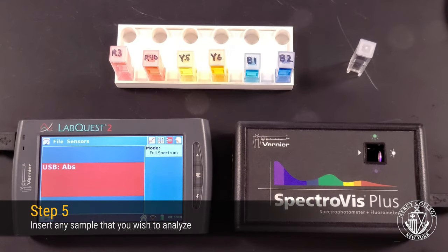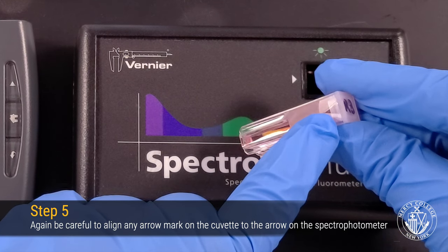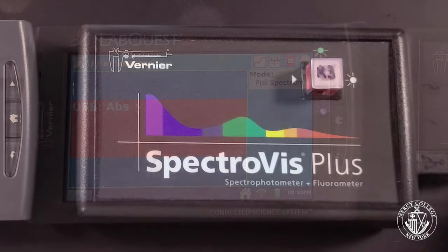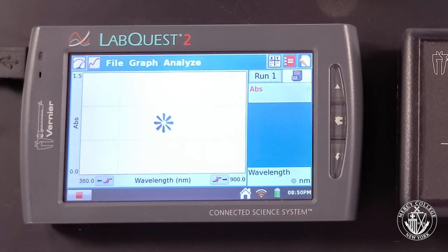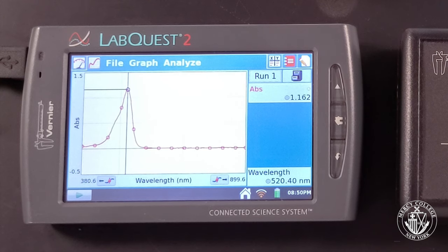Select a dye standard to analyze and carefully insert it into your spectrophotometer, again making sure the arrow on the cuvette aligns with the arrow on the spectrophotometer. Use the Play button in the lower left-hand corner to record your absorption spectrum. Once you've captured a stable recording, use the Stop button to end the data collection.